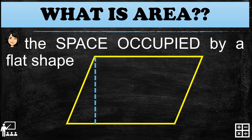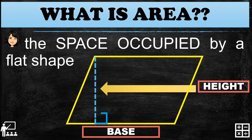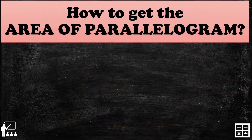In this polygon, which is the parallelogram, we use the terms base and height. The base is always at the bottom of the polygon. To determine the height, we must draw a line from a vertex down to the base, forming a right triangle. That right angle indicates the height of the parallelogram.